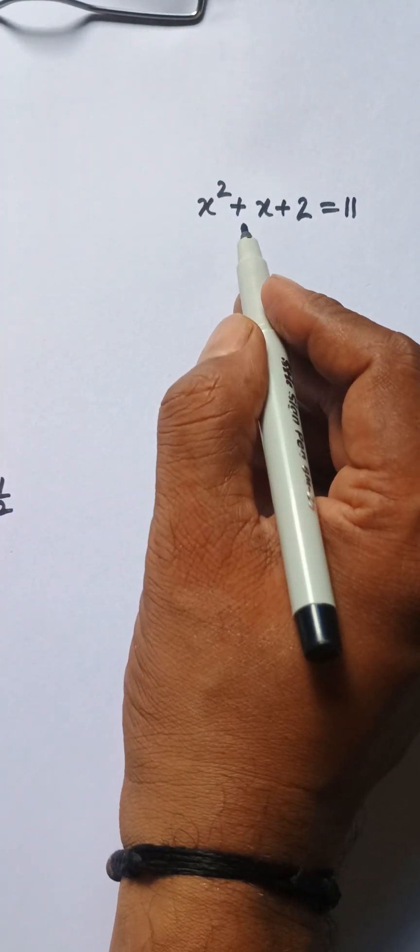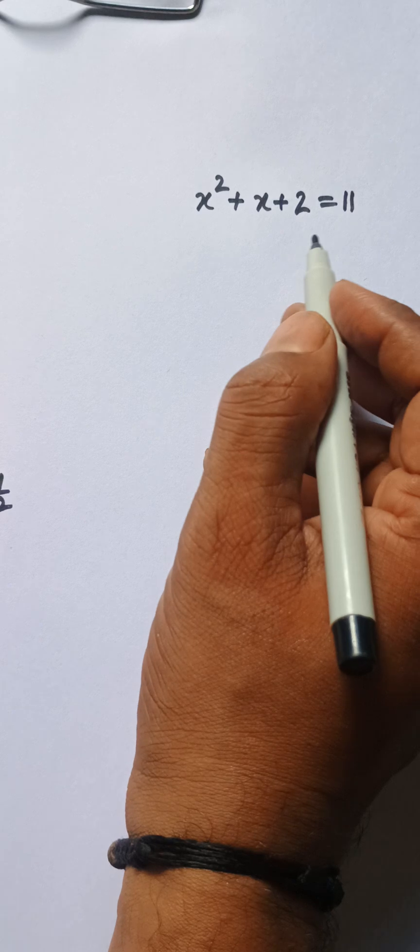Hello everyone, let's solve this problem: x squared plus x plus 2 equals 11. We need to find the value for x.